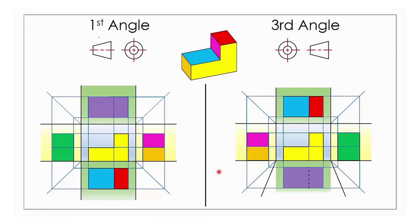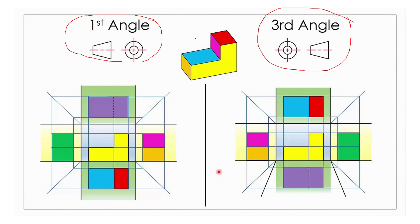Remember that your first paper was in first angle projection, but your second paper is in third angle. We are going to use this model as our example. The one thing you need to know about third angle projection is that everything is on its place. Top is at the top, right is at the right, left is on the left, and bottom is at the bottom. In first angle, it is quite the opposite — top will be down, bottom will be at the top, left will be on the right, and the right view will be on the left side. But in third angle, everything is on its place.